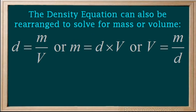The density equation can also be arranged to solve for mass or volume. Density equals m over v. Cross multiplying gives m equals d times v, and solving for v gives v equals m over d.